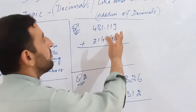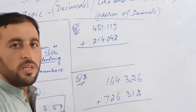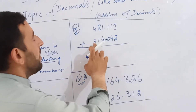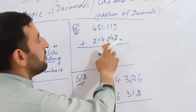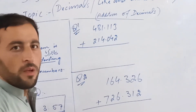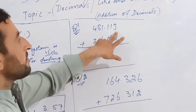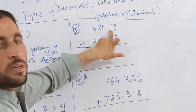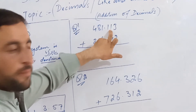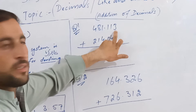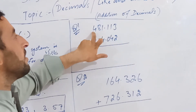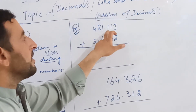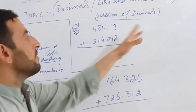If we get any one unit, the unit will be easily to the right side. So this is the question of 481.113 plus 214.042. Now there are units that are 10,000 units, 100,000 units, 1,000 units.